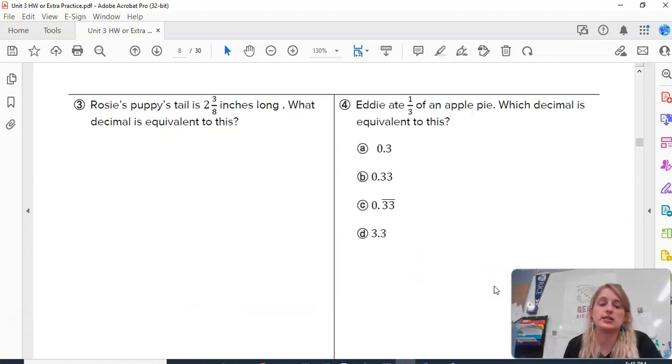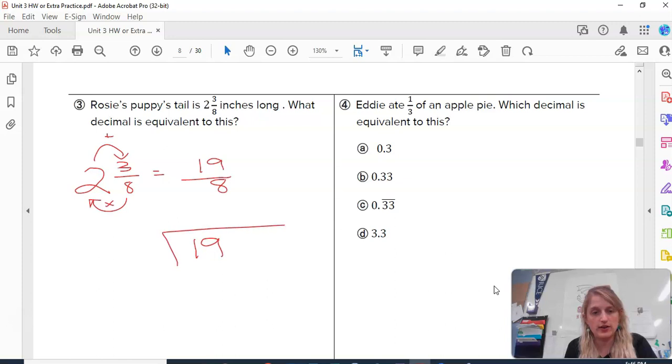Rosie's puppy tail is two and three-eighths inches long. Two and three-eighths. Eight times two is sixteen. Plus three is seventeen, eighteen, nineteen. We have nineteen-eighths, which means that we are saying nineteen divided by eight. If you remember in class, I told you that anything with a denominator of eight, like this one, is going to end up having three decimal, three numbers after the decimal point. So your answer is going to end up in the thousandths place. Please do not stop dividing until you get to the thousandths place. That decimal will terminate, will end after that point.